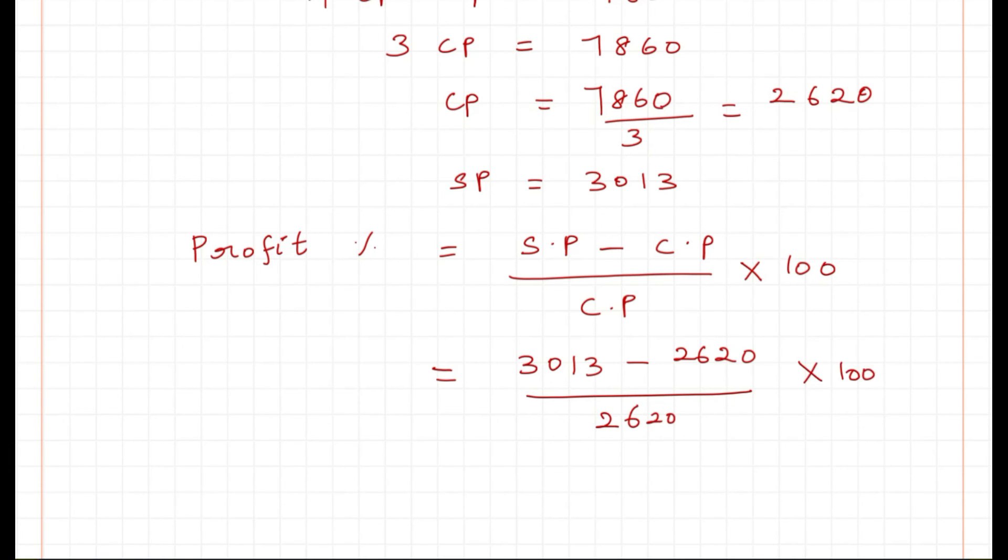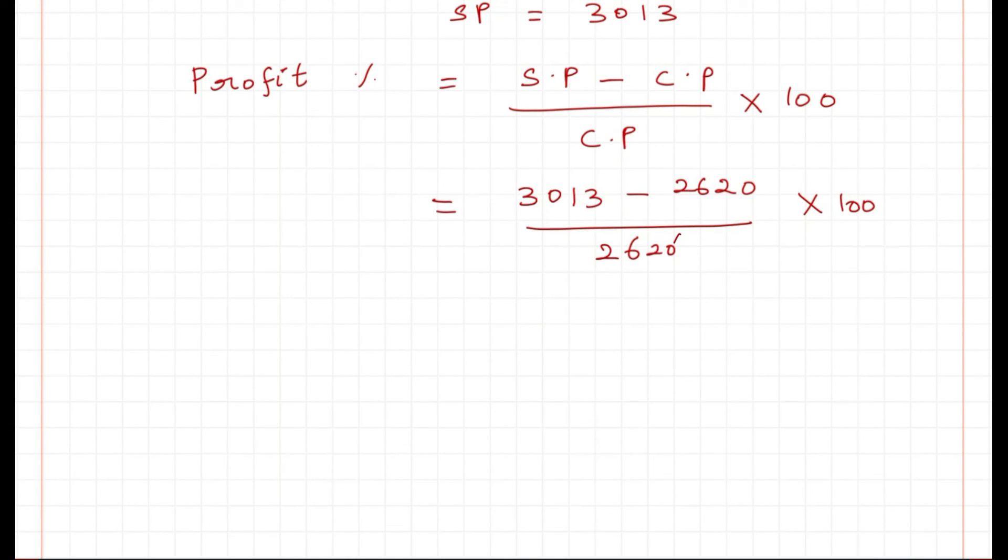Simplifying this we can find the profit percentage. The zeros get cancelled and then 3013 minus 2620 is 393 divided by 262 times 10.